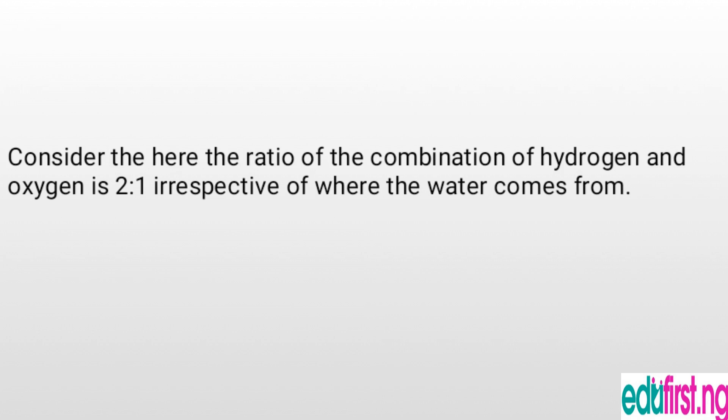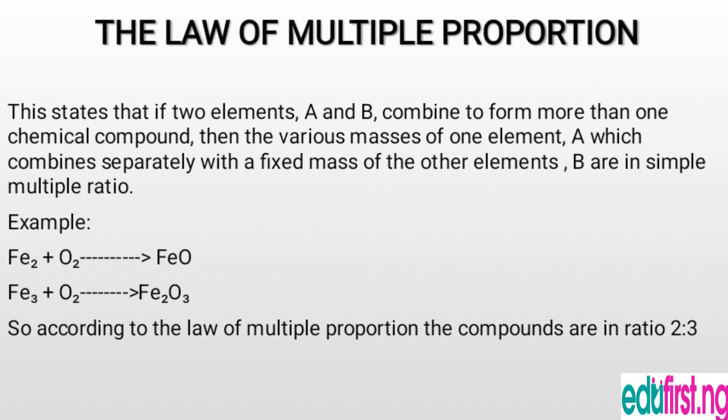Another example is carbon dioxide, CO₂ — the gas we breathe out. It is always in the proportion of 1 to 2: one atom of carbon and two atoms of oxygen. That is what the law of definite proportion means.